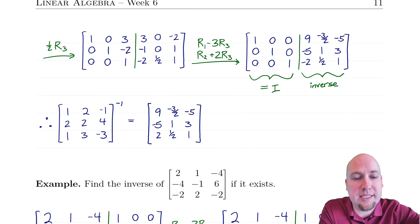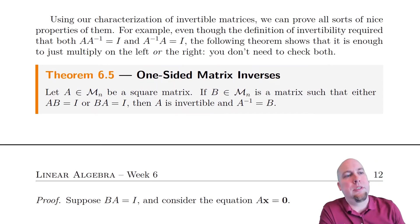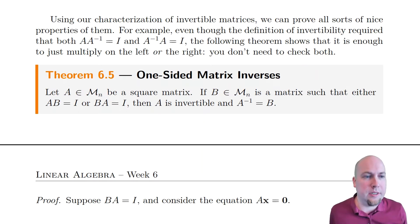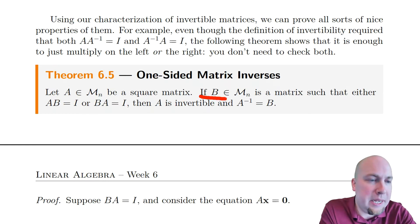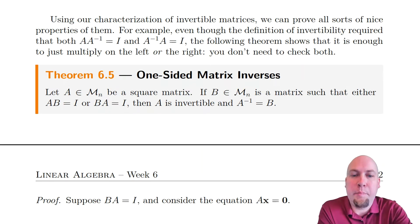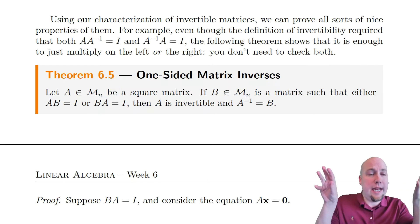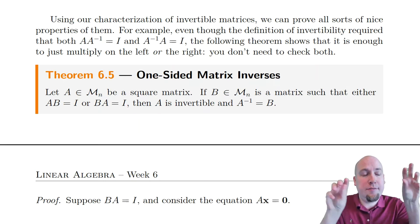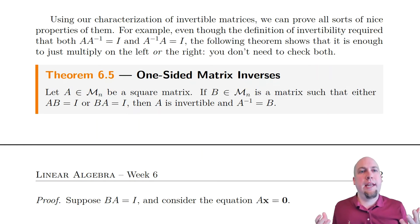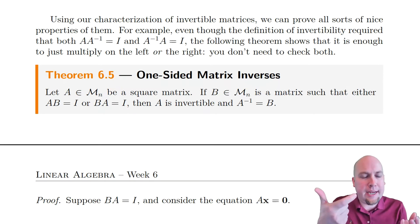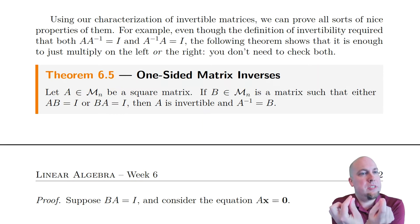Now we're going to introduce a theorem that says that's actually overkill. You don't have to multiply both ways. As long as it looks like an inverse from one side or the other, then it actually is the inverse. So if you find any matrix B such that AB equals the identity or BA equals the identity, then A must be invertible and B is the inverse of A. In other words, even though matrix multiplication in general is not commutative, this is one special case where it is — if AB equals the identity, you know right away that BA must also be the identity.